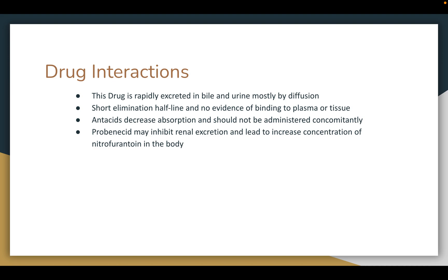For drug interactions: this drug is rapidly excreted in bile and urine, mostly by diffusion, with a short elimination half-life and no evidence of binding to plasma or tissue. Antacids decrease the absorption and should not be administered with this medication. Probenecid may inhibit renal excretion and lead to an increased concentration of nitrofurantoin in the body.